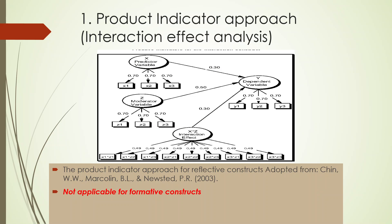For the product indicator approach: the dependent variable Y is captured by measured variables Y1, Y2, Y3. The predictor variable X is captured by X1, X2, X3. To introduce the moderator variable Z, with measured variables Z1, Z2, Z3, we multiply X1 with all three measured variables of the moderator — X1×Z1, X1×Z2, X1×Z3. The same process is carried out for X2 and X3. No need to worry — the software will do it automatically. Note that this method is not applicable for formative constructs.